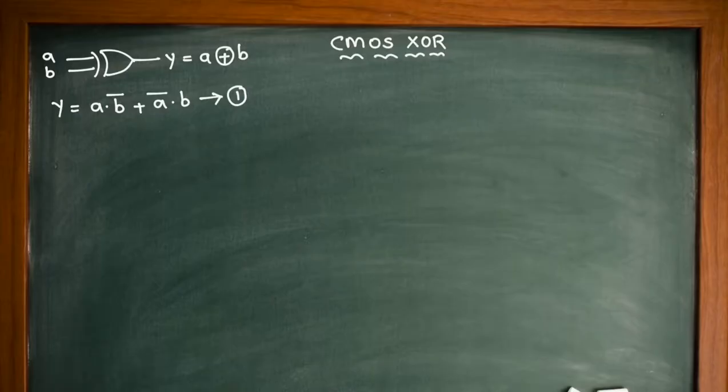So we know that there are two De Morgan's laws. A plus B whole bar can be written as A bar dot B bar. And the next one: A dot B whole bar will be A bar plus B bar.